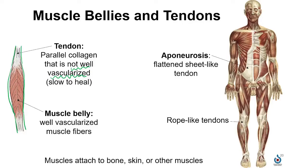Many muscles are attached to bone through rope-like tendons. However, a tendon can also be sheet-like, like we see on the abdominal wall, and we call that an aponeurosis. In the abdomen, the rectus sheath is an aponeurosis made up of the tendons of three different muscles, and this provides strength to the muscular abdominal wall.